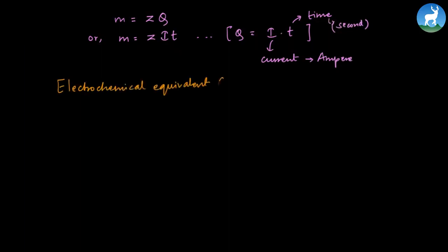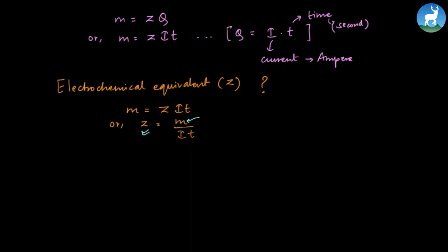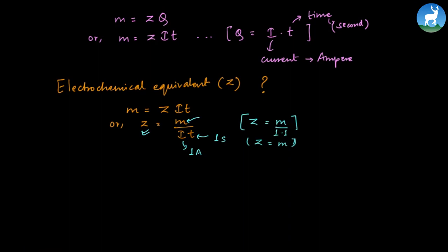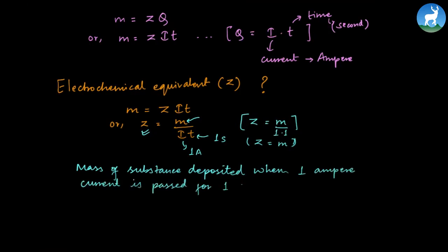This is the electrochemical equivalent Z, which we need to define. The relation is M equals Z times I times T, so Z equals M divided by I times T. The electrochemical equivalent Z is defined as the mass of substance deposited when a current of 1 ampere is passed for 1 second.